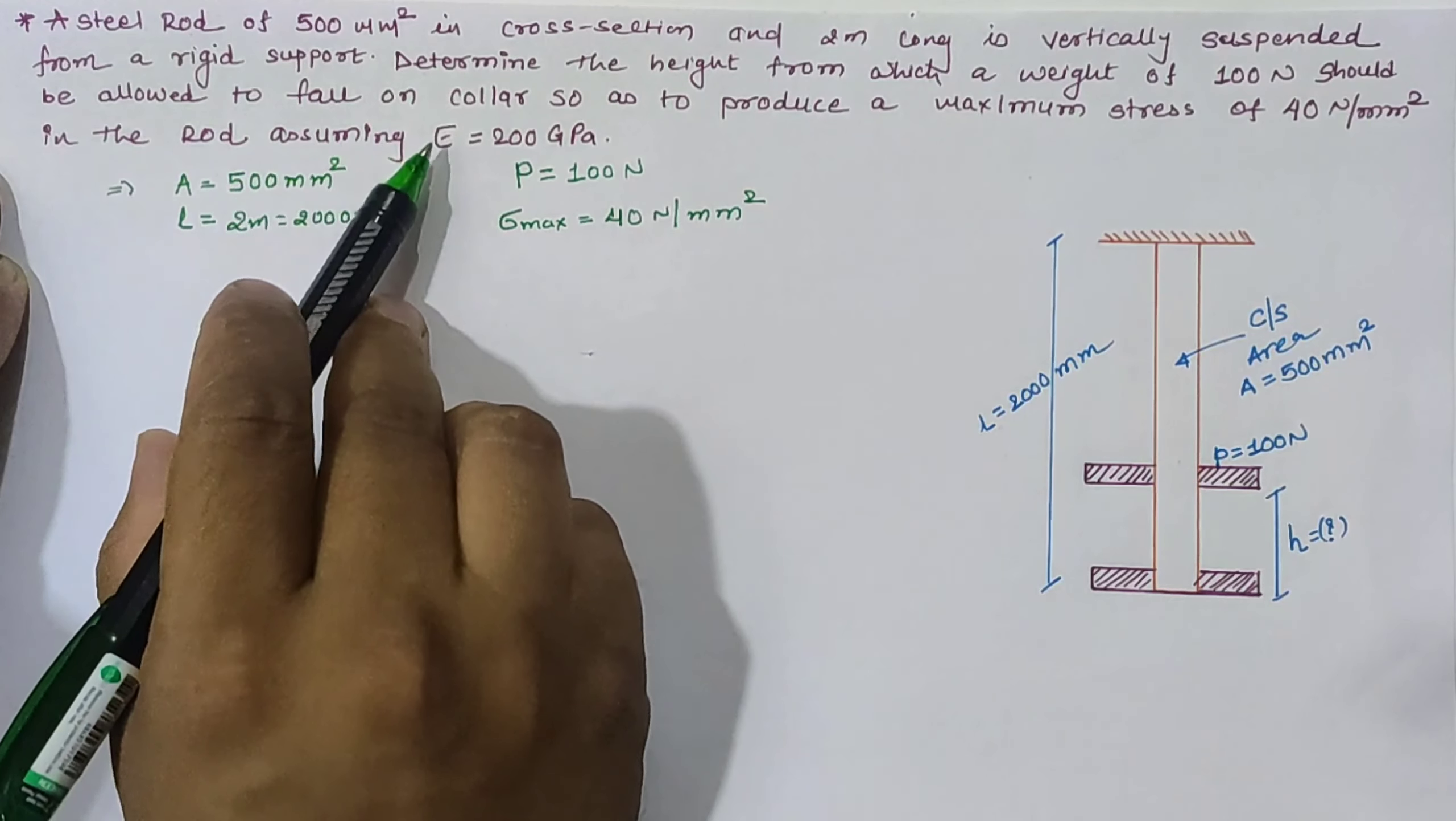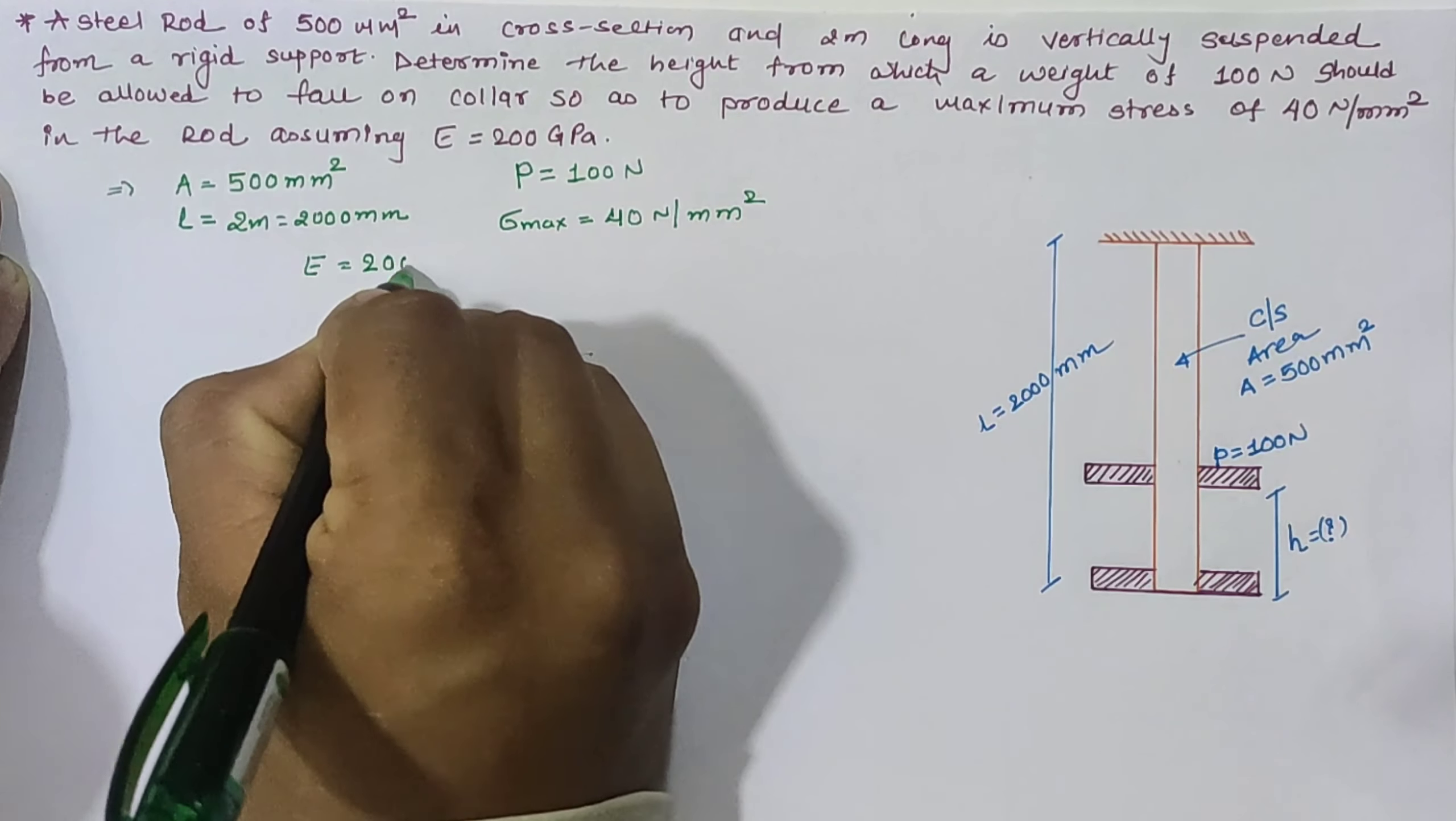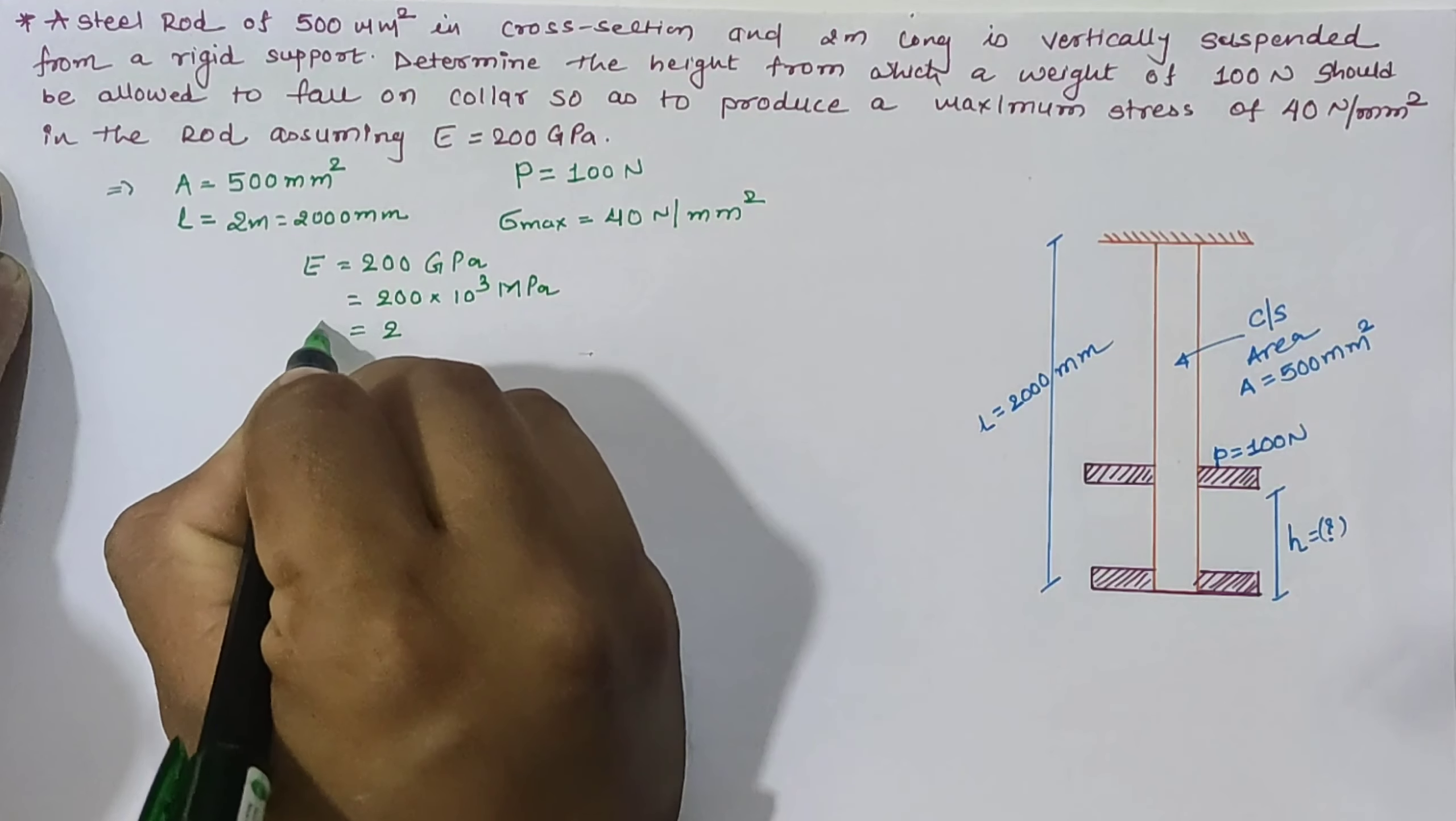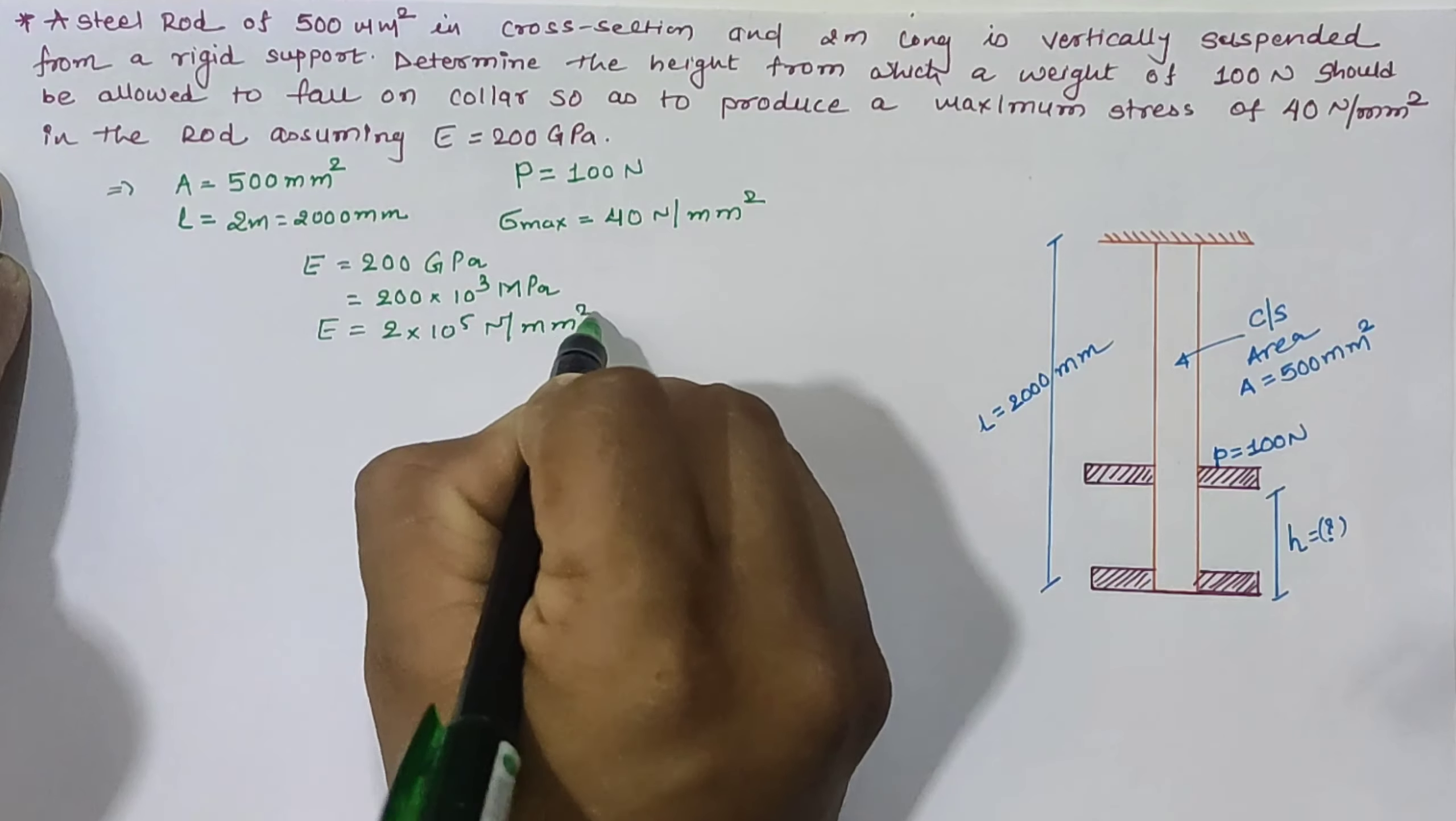We have to assume the modulus of elasticity as 200 GPa, which is 200 × 10³ MPa. Since 1 MPa equals 1 N/mm², the modulus of elasticity E = 2 × 10⁵ N/mm².